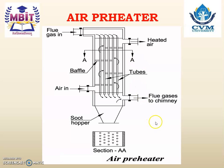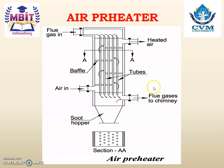The next boiler accessory we are going to study is the air preheater. This is the sketch for the air preheater. Air enters from the left-hand side bottom part and then moves up in a zigzag path due to baffle plates. These are baffle plates one, two, three, and four. Due to the baffle plates, air moves in a zigzag path and from the right-hand side top, heated air comes out. Hot gases enter from the top, pass through the tubes, and come out from the right-hand side bottom, where the flue gas is then taken out to the chimney.